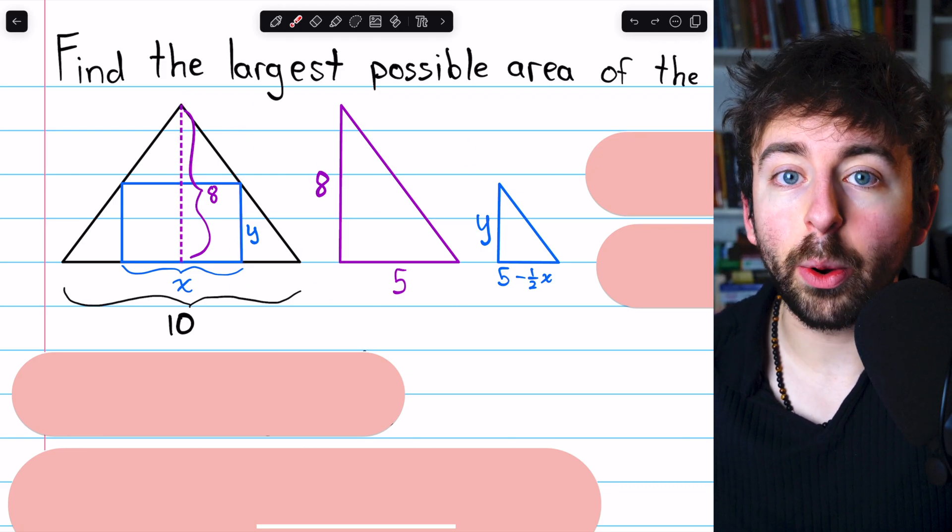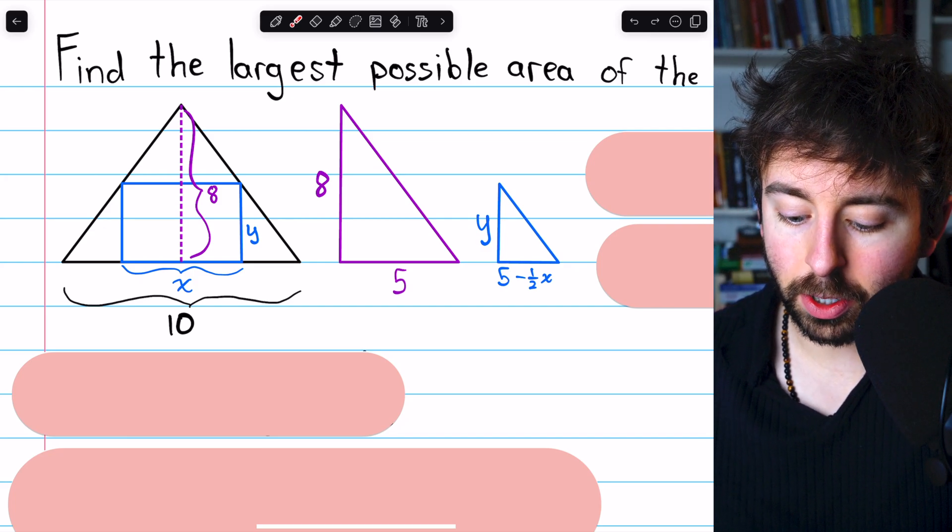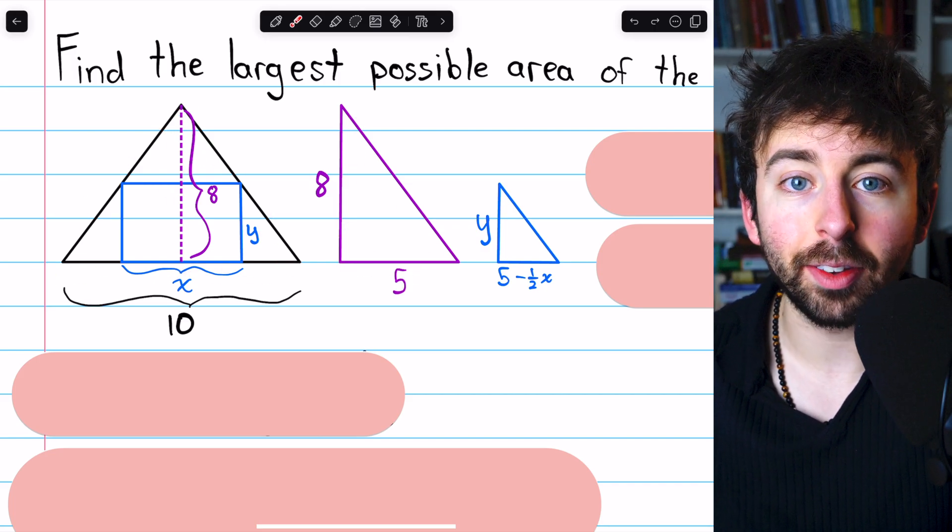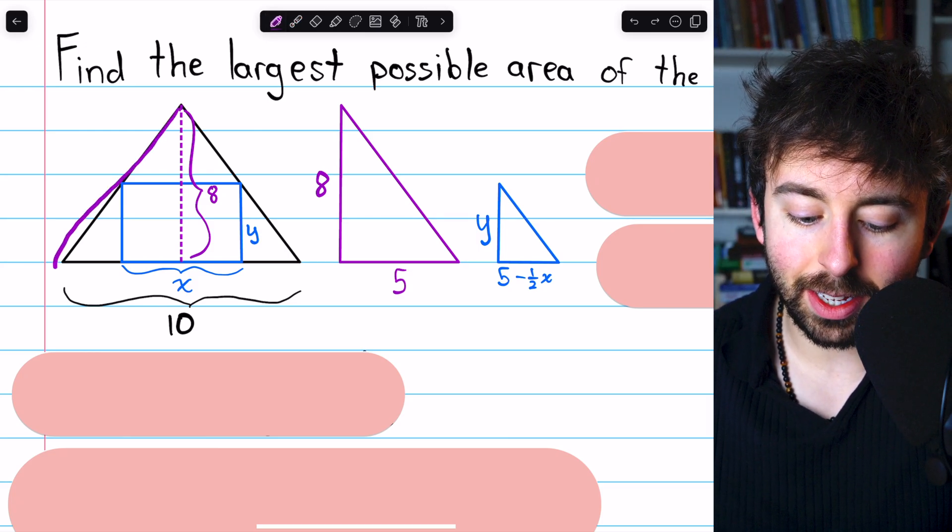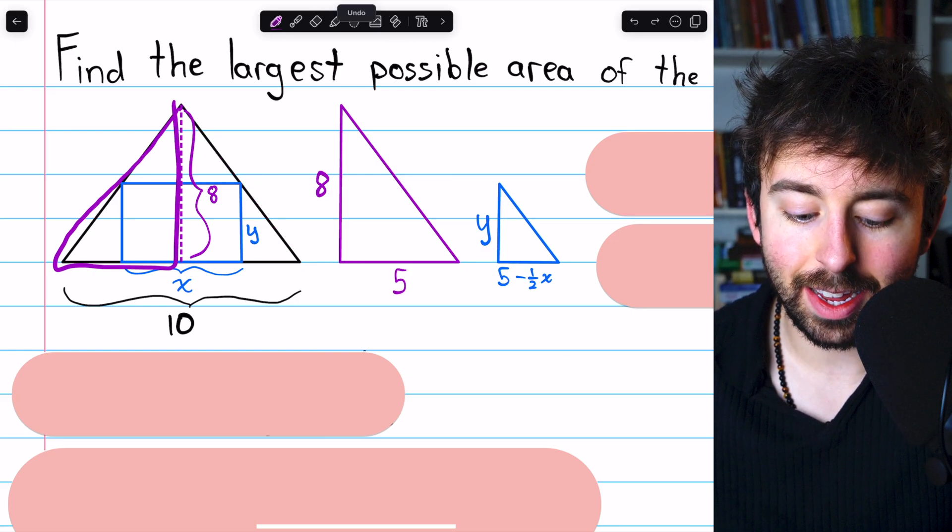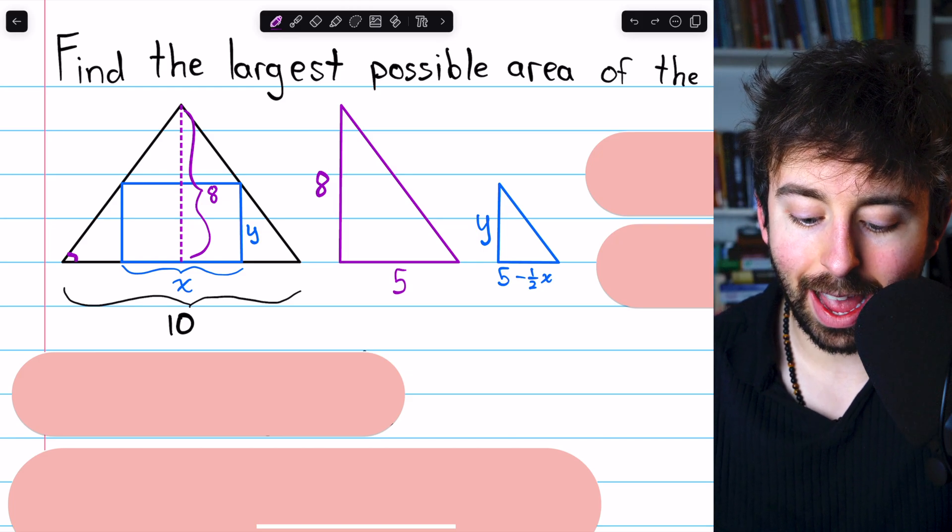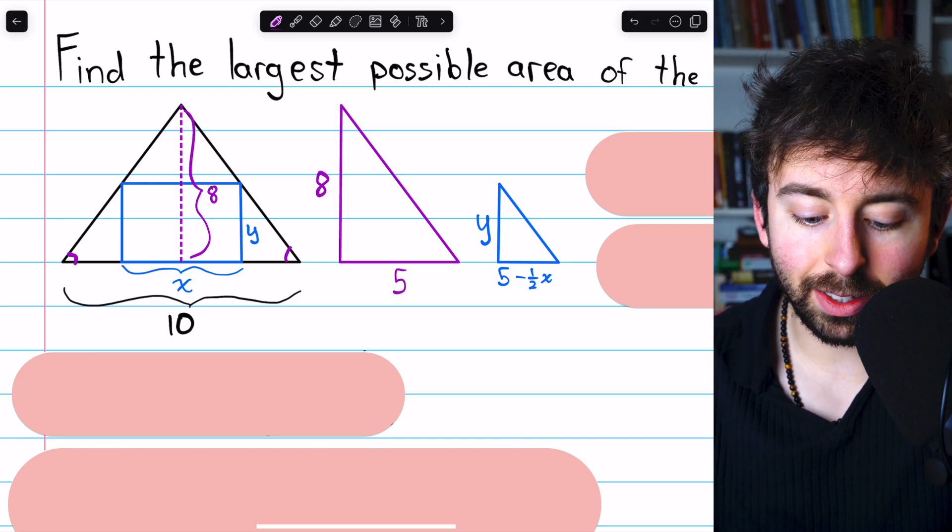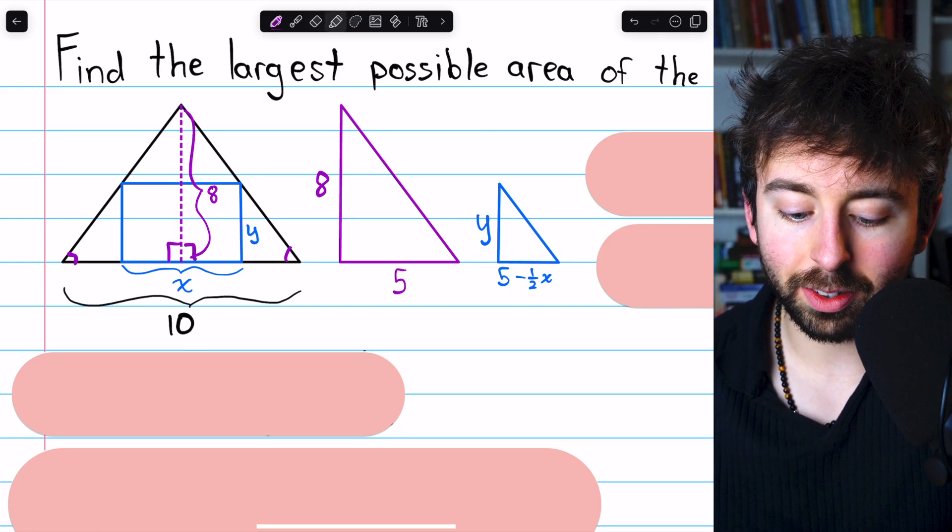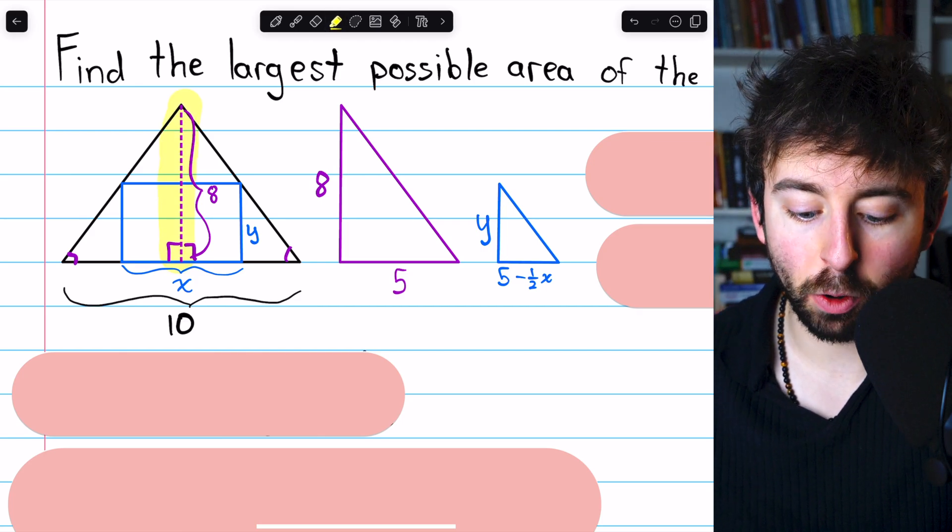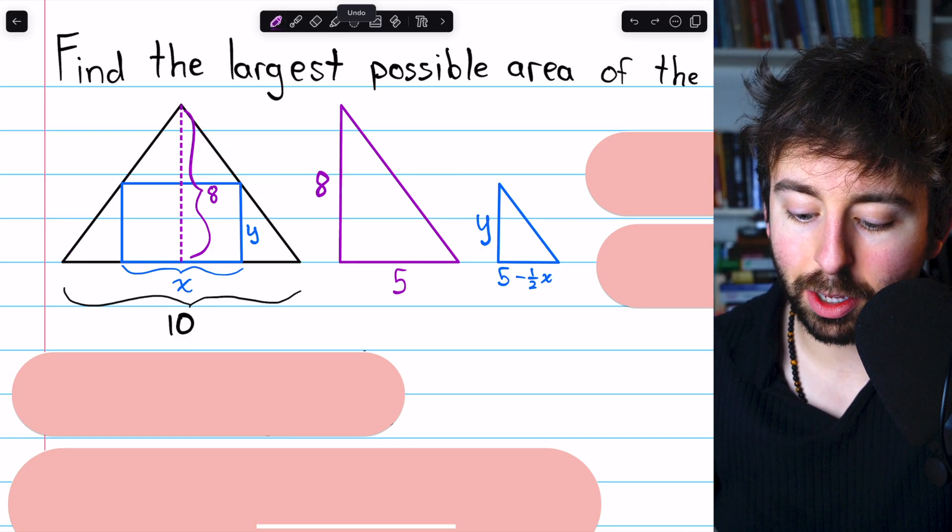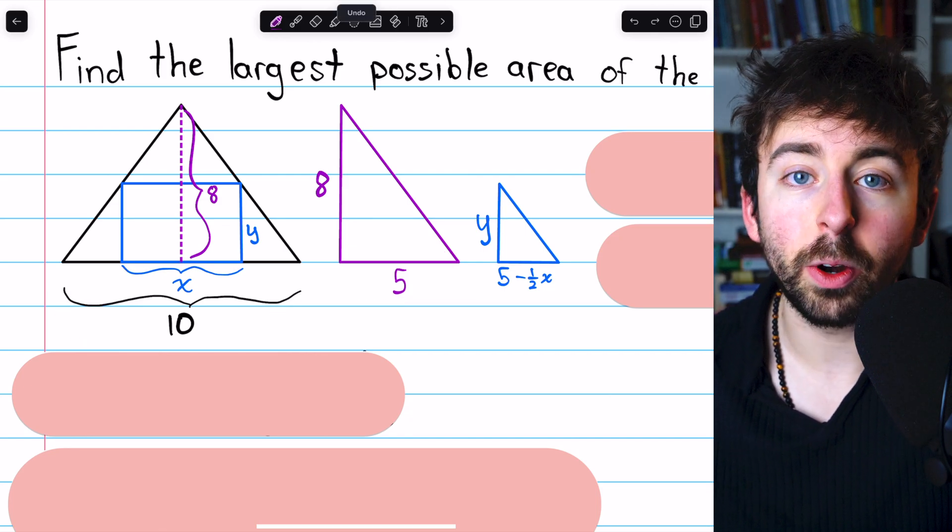A couple other things we should justify about our similar triangle picture. We know the triangles are similar. How do we know that this base of the big triangle is actually half the base of the larger isosceles triangle? It's pretty easy to see that these two halves are indeed congruent. We can use angle-angle-side to see that. By the isosceles triangle theorem, this angle is congruent to this one. This is a perpendicular because it's the height, and so this angle is congruent to this one. Of course, both halves share this side. So they are congruent by angle-angle-side. So the perpendicular did cut the isosceles in half. That's how we know it's 5.